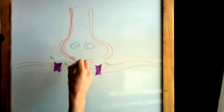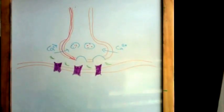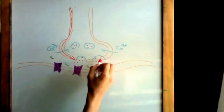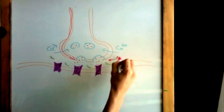An action potential arrives and depolarizes the synaptic terminal. This causes extracellular calcium ions to enter the synaptic terminal via voltage-gated calcium channels. This triggers the exocytosis of acetylcholine.